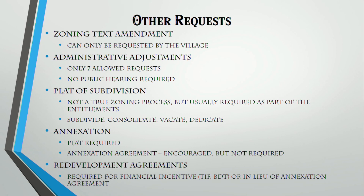A plat of subdivision is not a true zoning process but is usually required as part of any entitlement. A plat can subdivide — take one lot and make it two; consolidate — take two lots and make one; vacate — turn an unused alley or right-of-way into a taxable parcel; or dedicate — turn a taxable parcel into right-of-way for the village. These four functions can all be done simultaneously.